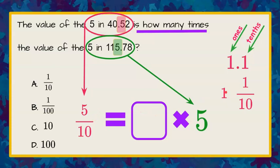Well just as it was here, this is one tenth of one. This number is one tenth of five. Five times one tenth would be five tenths. So our answer choice is A, one tenth.